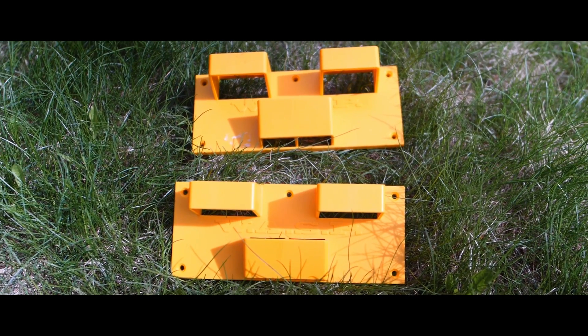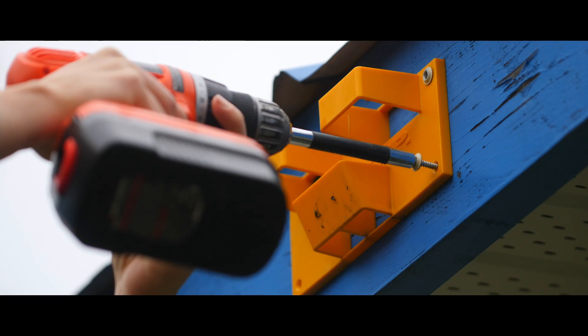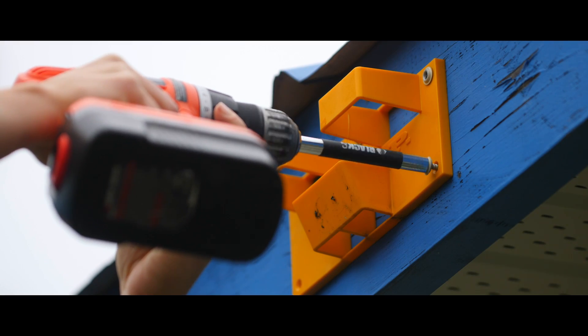The kit also includes two brackets which can be installed on your fascia or fences, which is great for structures without gutters.